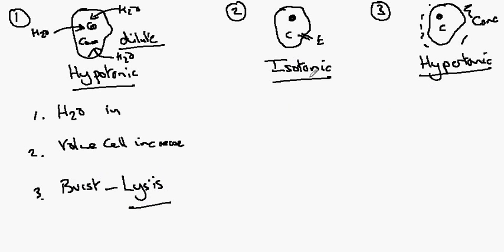In an isotonic solution the amount of water going into the cell is equal to the amount of water going out of the cell. The volume remains constant.